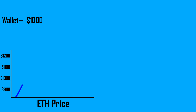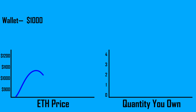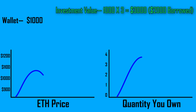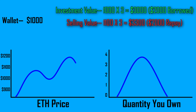Suppose you have 1000 USDT in your margin account and the current price of Ethereum is 1000 USDT. You borrow 2000 USDT using 3x leverage and bought three quantities of Ethereum. Now suppose after a few hours the price of Ethereum increases from 1000 to 1100 USDT. You sold three quantities of Ethereum and repaid the 2000 USDT borrowed amount, earning 300 USDT profit in this trade.